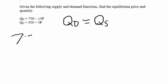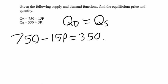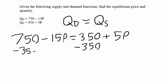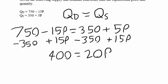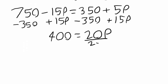So in order to find our equilibrium price and quantity, we set quantity demanded equal to quantity supplied: 750 minus 15p equals 350 plus 5p. If we subtract 350 from both sides and add 15p to both sides, we get 400 equals 20p. Dividing both sides by 20, p equals 20.